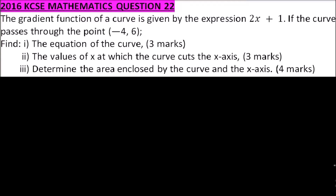Question number 22. We are told the gradient function of a curve is given by the expression 2x plus 1. If the curve passes through the point (-4, 6), find the equation of the curve. We say dy over dx is equal to 2x plus 1 — that is the gradient function.